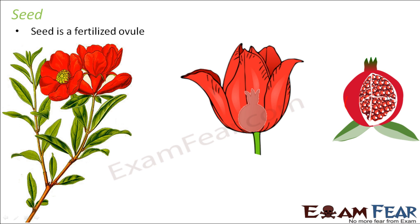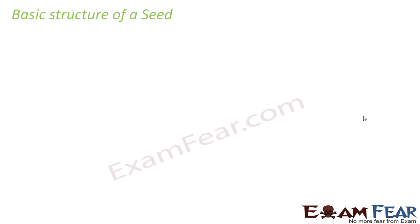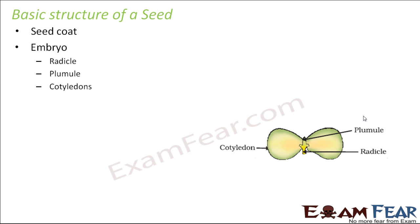Take a pomegranate for example — the fruit is the ovary of the flower and the seeds are the ovules. The basic structure of a seed contains a seed coat, an embryo, and the embryo contains a radicle, a plumule, and cotyledons. A seed is capable of giving rise to a new plant because it has all the necessary parts to grow into a completely independent plant.